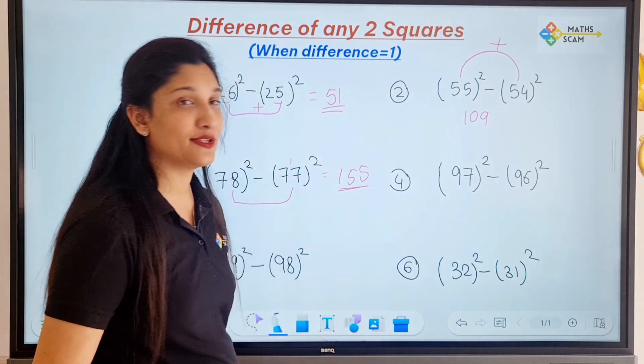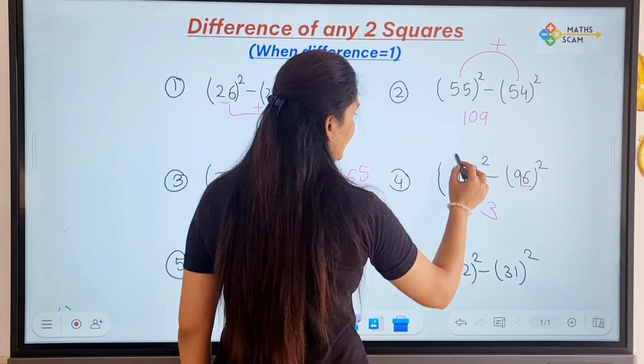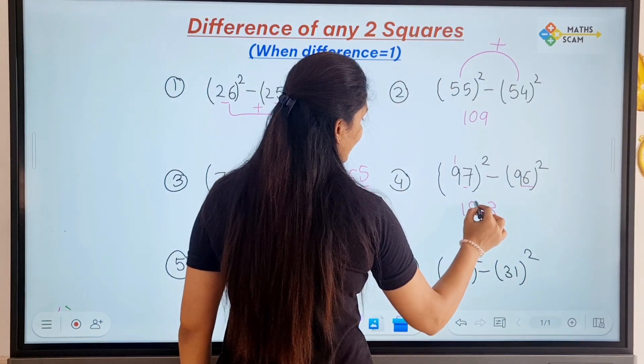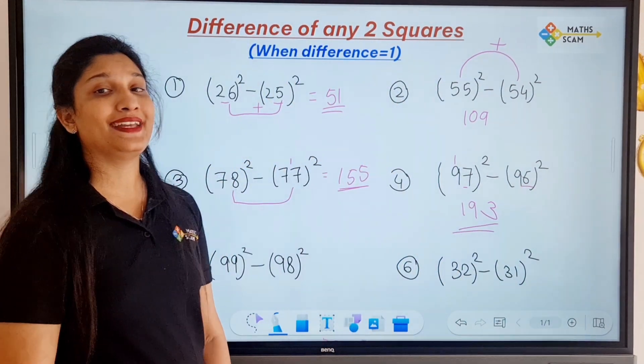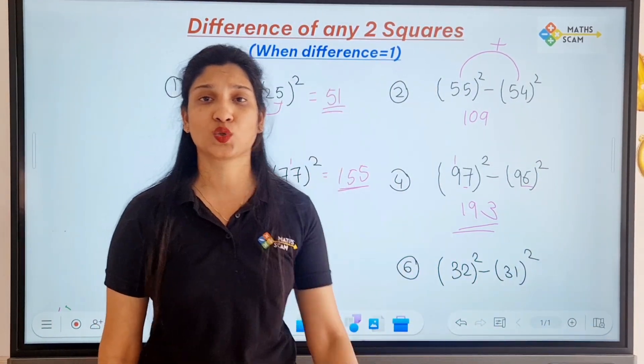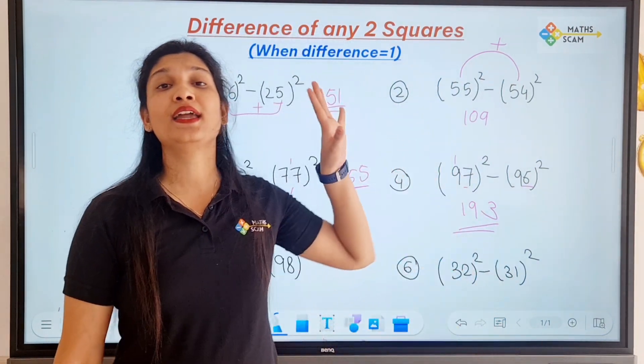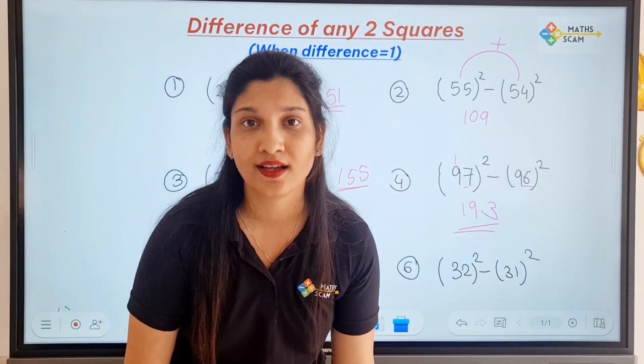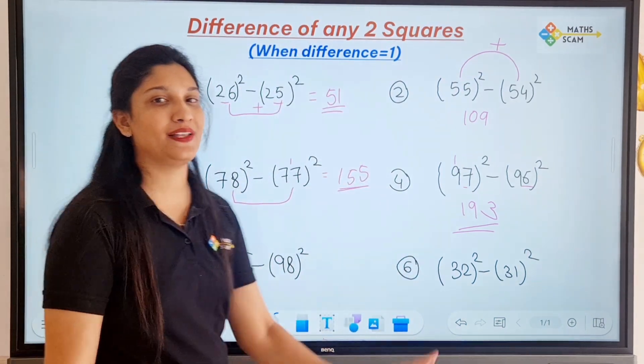The last question: 97² minus 96². 97 plus 96... 7 plus 6 is 13, 9 plus 9 is 18, plus 1 is 19. Answer is 193. Without actually finding squares and without doing the difference of those squares, we are finding the answer by just doing addition. And this is the power of basic math.